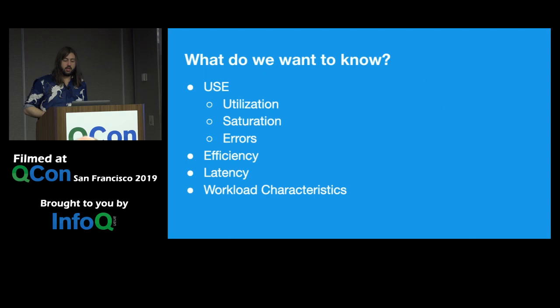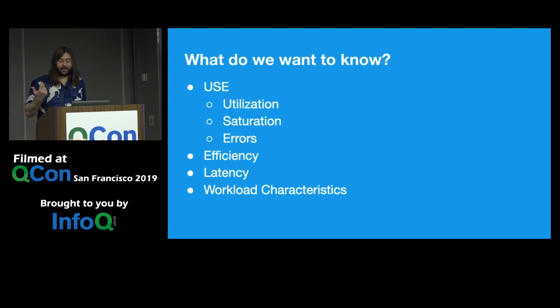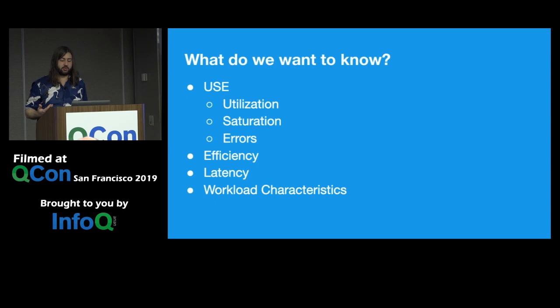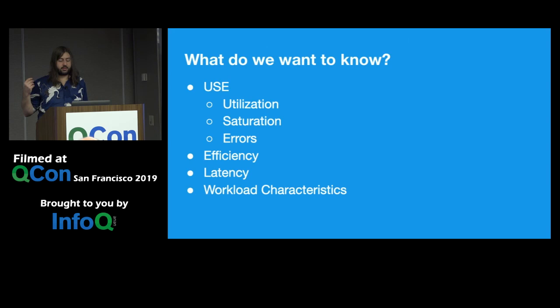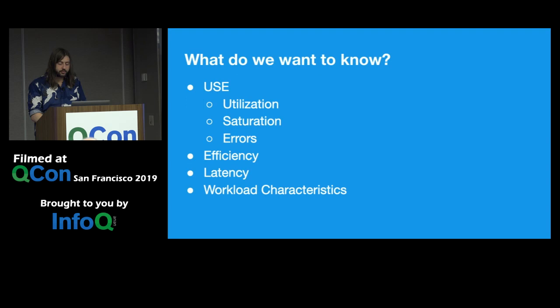Beyond USE, we begin to look at things like efficiency — a measure of how well our workload is running on a given platform or resource. This might be the amount of QPS per dollar, or we might be trying to optimize for power efficiency, getting the most workload for the least power expense. We can also look at efficiency in terms of specific hardware resources like CPU cache hit rate and branch predictor performance. Another really important aspect, particularly in distributed microservice architectures, is latency — how long it takes to perform a given operation.